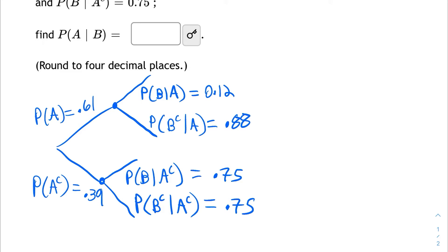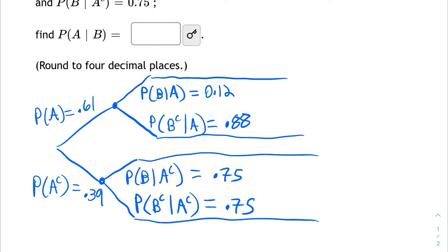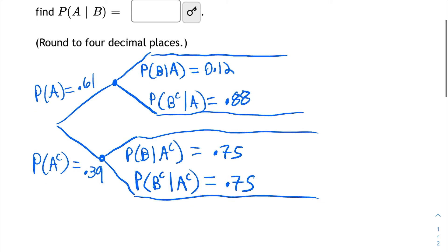Now I'm ready to find my joint probabilities. For my joint probabilities, I'm just going to find these products. So first, the probability of A and B — I'm going to use the intersection symbol. The probability of A and B has to be the product of these two: the probability of A, multiplied by the probability of B given that A has already happened. So that's 0.61 times 0.12, which is 0.0732.